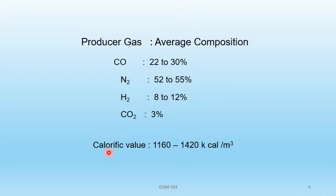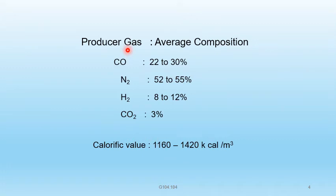The calorific value of producer gas is 1160 to 1420 kilocalories per meter cube. This is the amount of heat energy liberated by the combustion of unit weight or volume of producer gas.